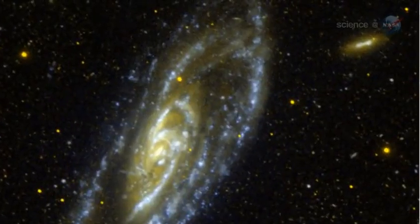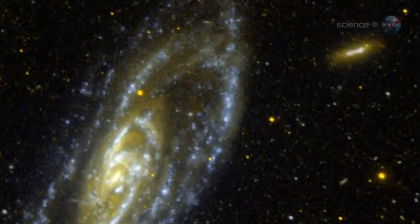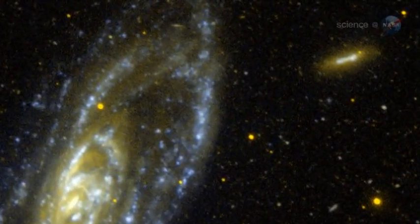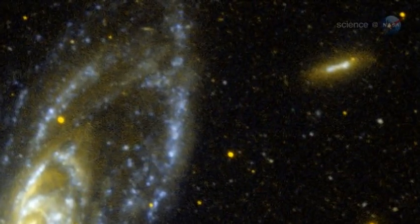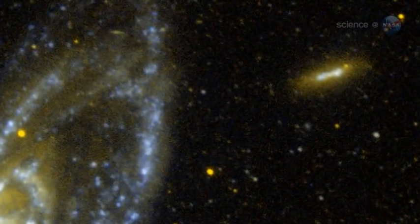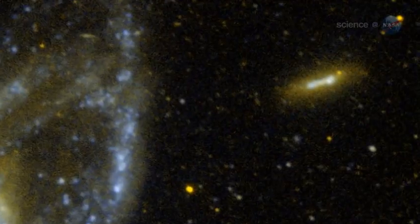But when GALAX looks at other, more distant spiral galaxies, it sees stars forming outside the gassy spiral disk. I was dumbfounded, he said. These stars are truly living on the edge.